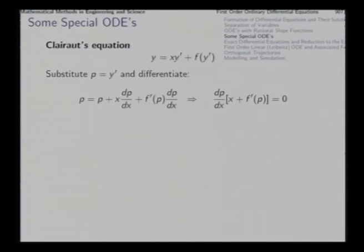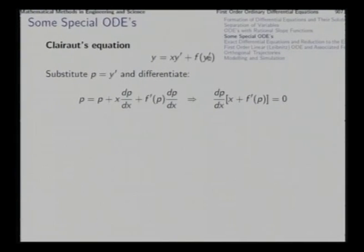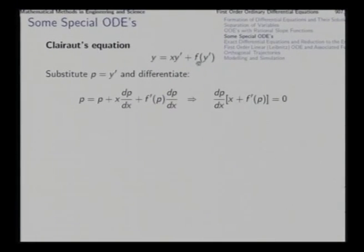A particular kind of nonlinear first-order differential equation is called Clairaut's equation, which appears when we have y = x·y' + f(y'). The term f(y') makes the equation nonlinear. We call the derivative y' = p, so the equation becomes y = xp + f(p). We then differentiate both sides with respect to x: on the left dy/dx = p, and on the right the derivative of xp is p + x·dp/dx, while the derivative of f(p) with respect to x is f'(p)·dp/dx.